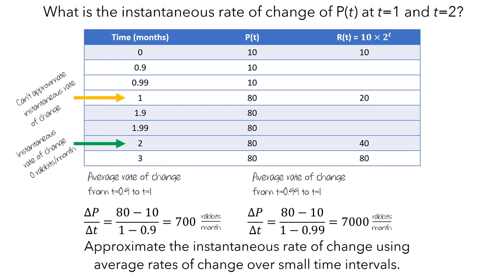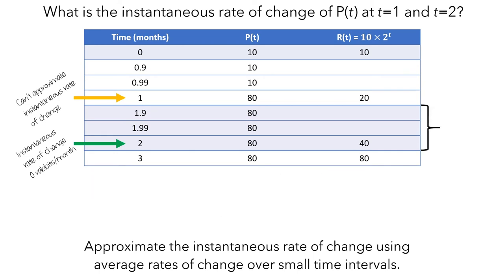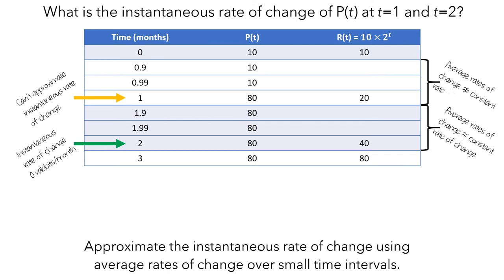Why is this happening? At t equals 2 months, when we computed average rates of change over successively smaller intervals, the values of delta p were always proportional to delta t — in this case, 0 times as large. Thus, there were sufficiently small values of delta t where the average rate of change was indistinguishable from a constant rate of change. In contrast, at t equals 1 month, the smaller we made delta t, the larger the average rates of change became. There were no values of delta t for which delta p was proportional to delta t, so the average rates of change were never close to a constant.